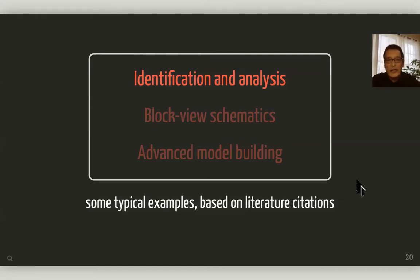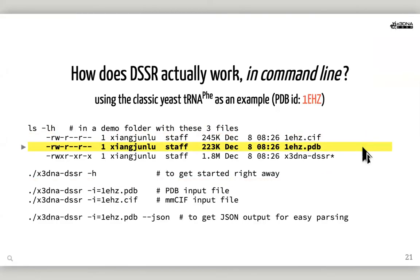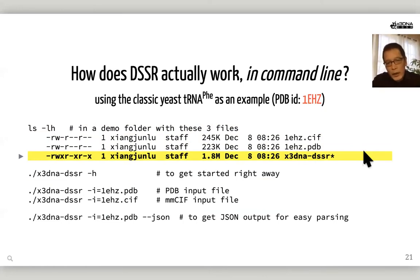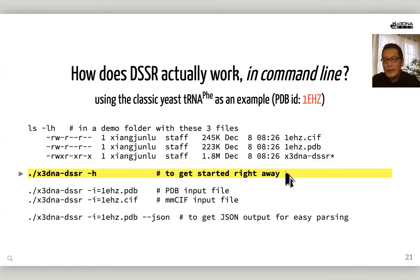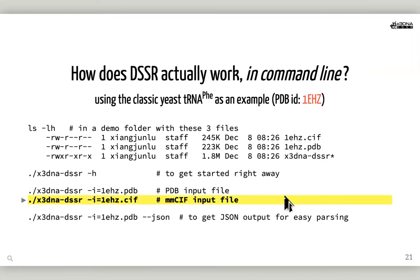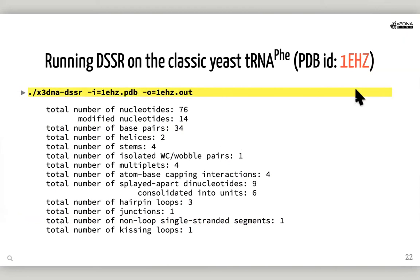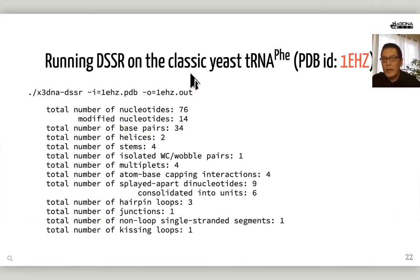First, let's focus on identification and analysis. I will use typical examples built on literature citations. DSSR is a command line program. All the features are integrated into a small executable X3DNA DSSR, which is only 1.8 megabytes with no external dependencies. You can get started just by running the help command. DSSR can take PDB or mmCIF as input, and can generate JSON output for easy parsing. For a classic tRNA, you run the program by providing input and output.